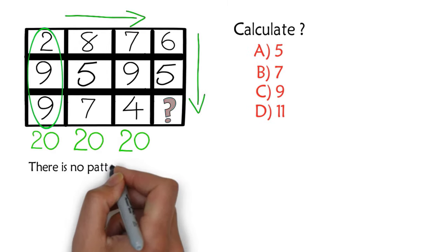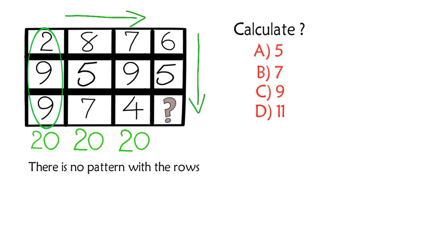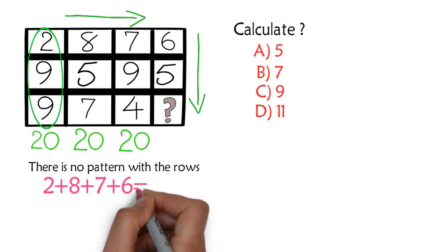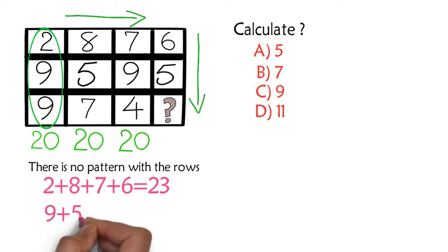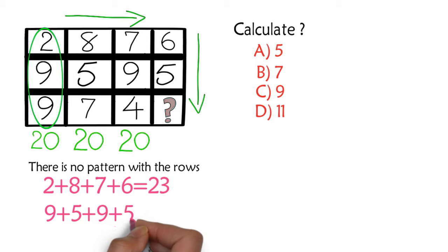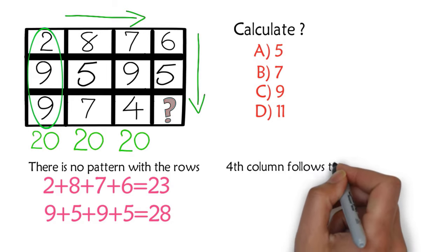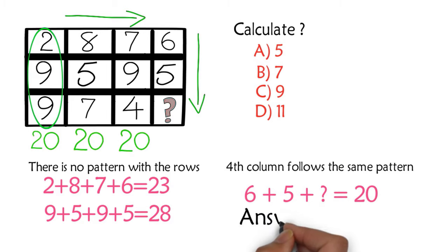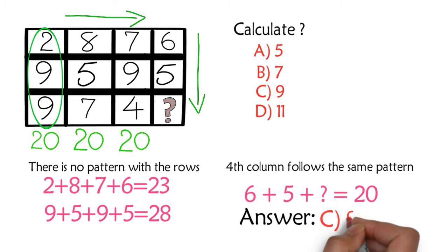We also want to check if there is a pattern with the rows, and there is no pattern because the first row adds up to 23 — 2 plus 8 plus 7 plus 6 equals 23 — and the second row adds up to 28. So based on this information you can calculate the missing value: 6 plus 5 plus question mark equals 20, so the answer is C, 9.